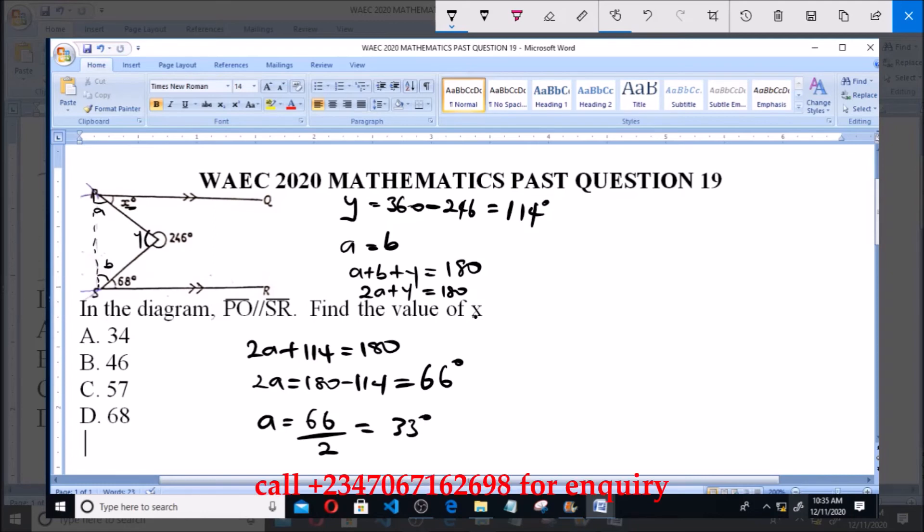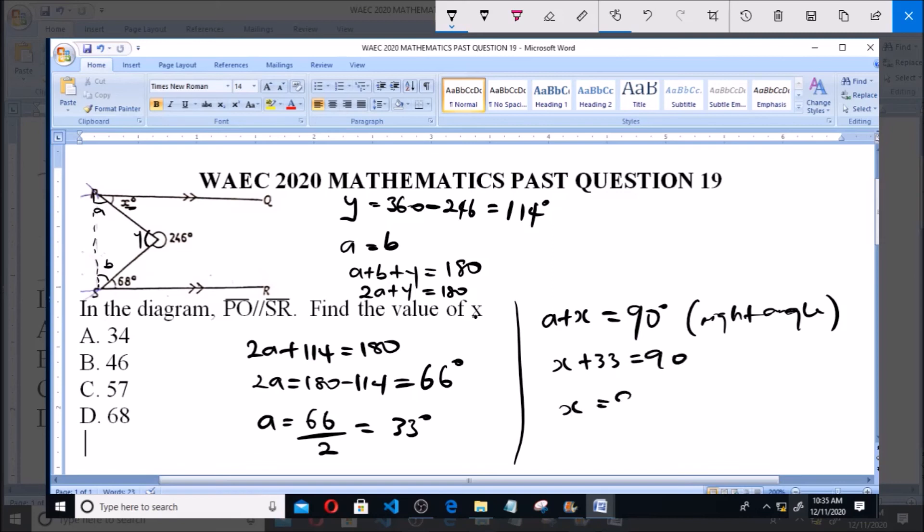Now since the value of a is 33 degrees, if you look at it, a and x form a right angle. So a plus x is equals to 90 degrees. And a is 33, so that means x plus 33 is equals to 90. x is equals to 90 minus 33, so x is equals to 57 degrees.